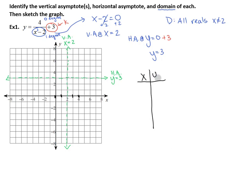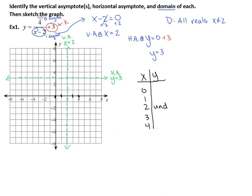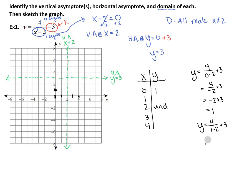We'll make a t-chart. Plugging in x equals 0: 0 minus 2 is negative 2; 4 divided by negative 2 is negative 2; negative 2 plus 3 is 1. So the point is (0, 1). Plugging in x equals 1: 1 minus 2 is negative 1; 4 divided by negative 1 is negative 4; plus 3 gives negative 1. So the point is (1, negative 1).